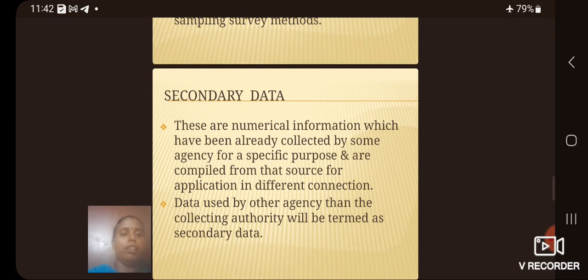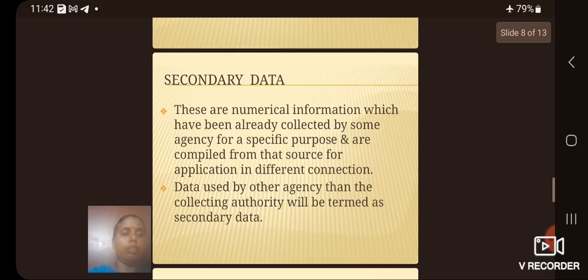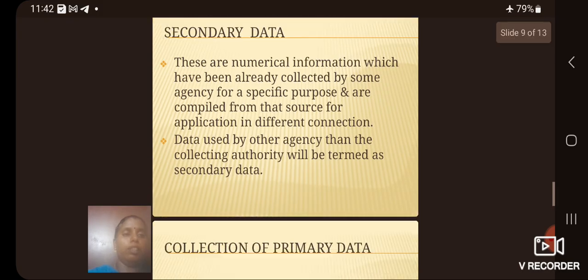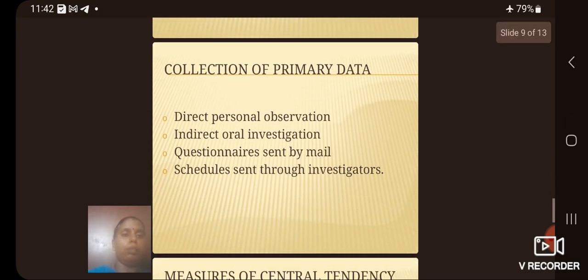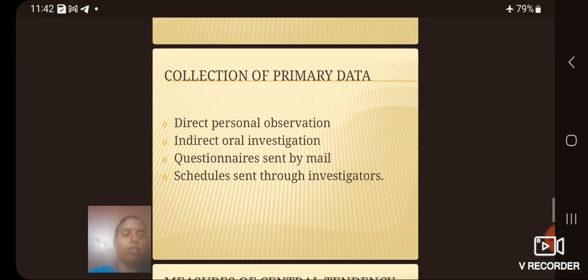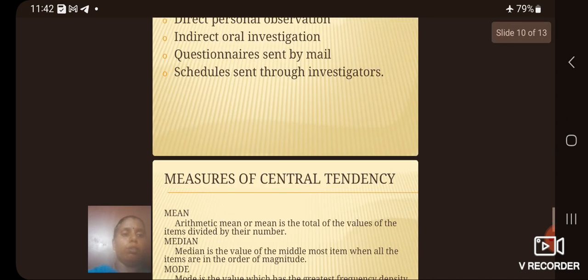Secondary data are numerical information which have been already collected by some agency for a specific purpose and are compiled from the source for application in different connection. Collection of primary data can be direct personal observation, indirect oral investigation, questionnaires sent by mail and schedules sent through investigators.